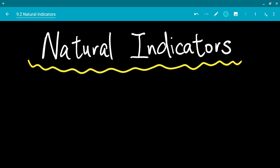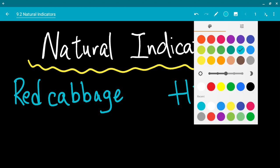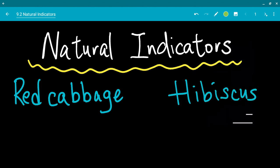So natural indicators, some examples we have learned just now are two plants. Let's go ahead and write that down. Red cabbage. And just now we also talk about red roses, but let me say hibiscus. And what do they contain? What do they contain? What do these plants contain? They contain pigments.